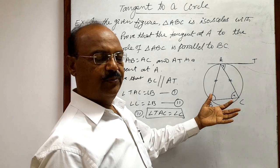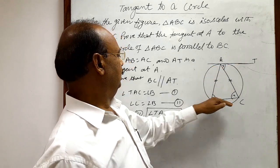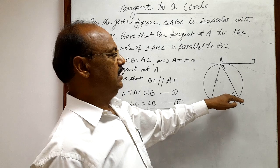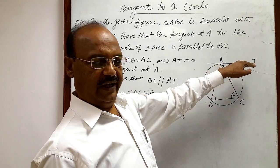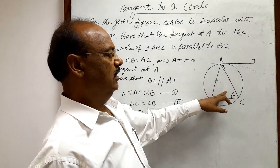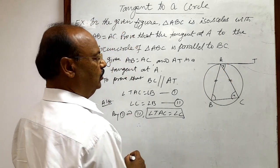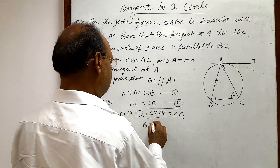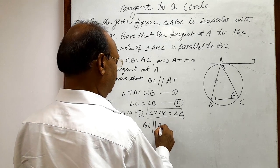it has been proved. Obviously, AT is parallel to BC. Or we can write BC is parallel to AT. Why? Because these two alternate angles are equal. And therefore,